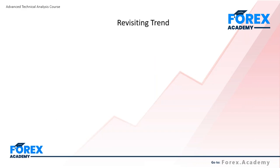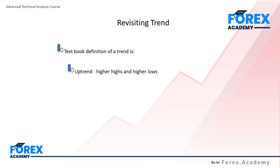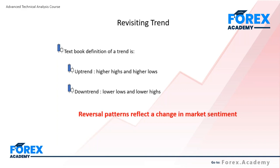Let's revisit the concept of trend. You will remember from last week's discussion that the textbook definition of a trend is: in an uptrend, we are dealing with higher highs and higher lows, or a sequence of higher highs and higher lows. This has to exist for a market to be moving price-wise in an upward direction. A downtrend is simply defined as a market that has defined a sequence of lower lows and lower highs. When we look at reversal patterns, because they reflect a change in market sentiment, they will obviously be highlighting an early warning sign of a change in either an uptrend that has been intact or a downtrend that has been dominant.